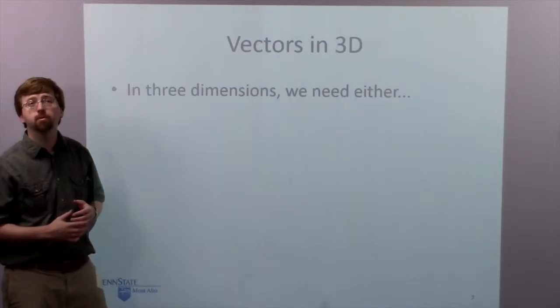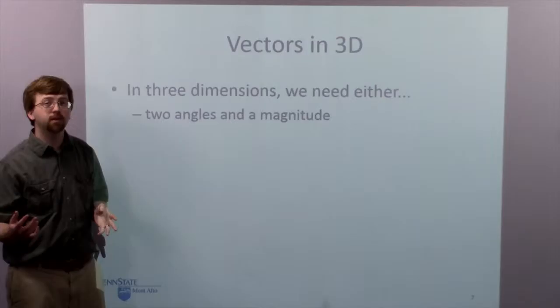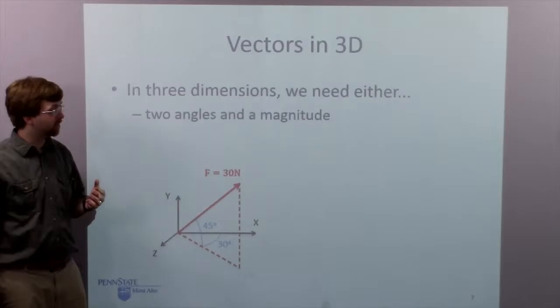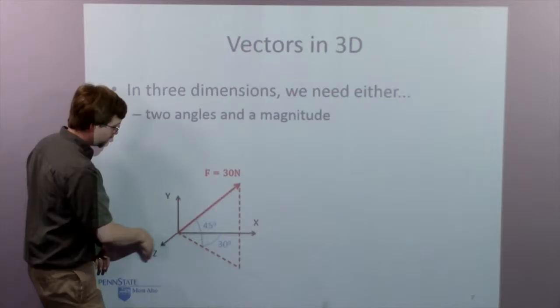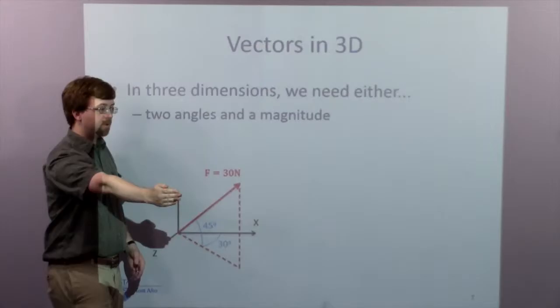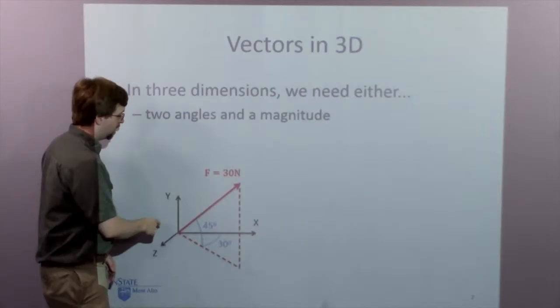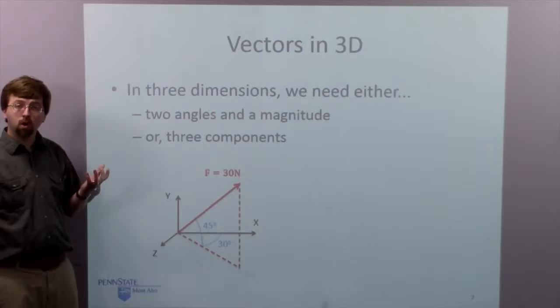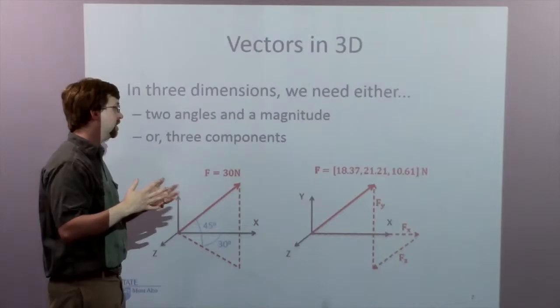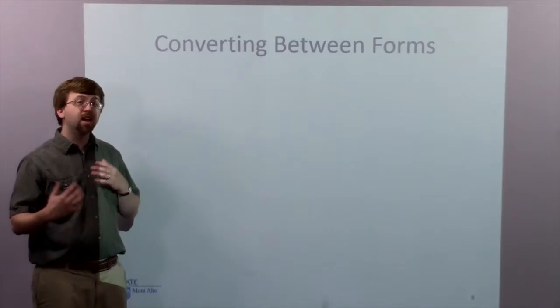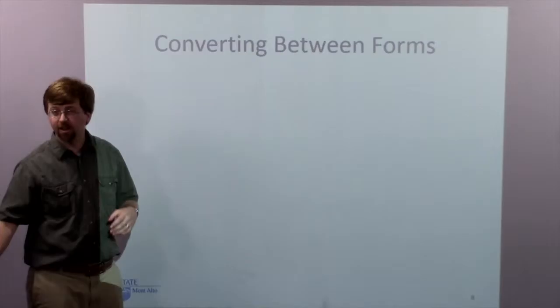That was 2D. When we jump into 3D, we still have two forms, but they're slightly different. In 3D, I need either a magnitude and two different angles, or I'm going to have three components — x, y, and z. With x, y, and z axes, I would use one angle out from the board and another angle going up from there to give the direction, with the magnitude the same as before. Or with three components, I would simply have x, y, and z components. Converting between these two forms in 3D is a little more complicated, but the same principle applies.